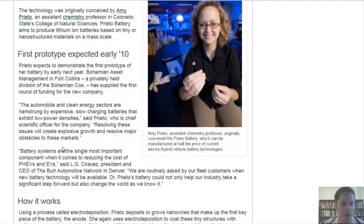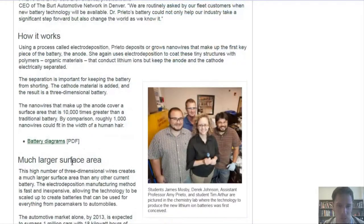The article further states that Prieto, shown here in this picture, expects to demonstrate the first prototype of her battery by early next year. Using a process called electrodeposition, Prieto deposits or grows nanowires that make up the first key piece of the battery, the anode. She again uses electrodeposition to coat these tiny structures with polymers—organic materials that conduct lithium ions but keep the anode and the cathode electrically separated.